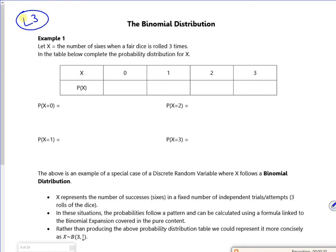So it says, let X be the number of sixes when a fair dice is rolled three times. So X equals zero means I don't get a six three times. So it's like the probability of not a six, not a six, not a six. So that's going to be not a six is five-sixths, five-sixths, five-sixths. Or I can write it as five over six all cubed. Because then that matches the first term of a binomial expansion. So five over six all cubed, so that's 125 over 216.